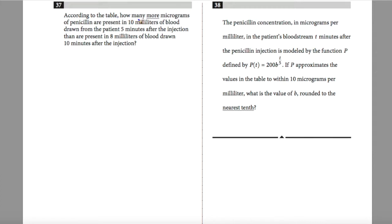Question 37 states, according to the table, how many more micrograms of penicillin are present in 10 milliliters of blood drawn from a patient five minutes after the injection than are present in 8 milliliters of blood drawn 10 minutes after the injection? If I go back to my table, I see that for five minutes after, I have 152 micrograms per one milliliter. If I draw 10 milliliters of blood, I have 1,520 micrograms of blood expected.